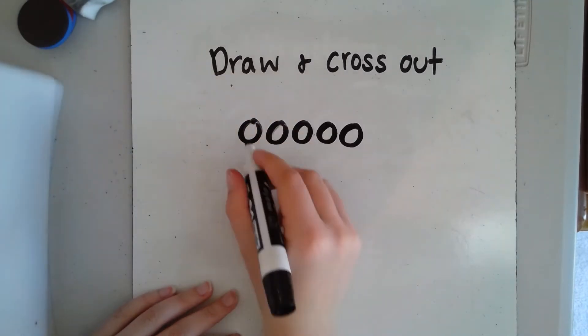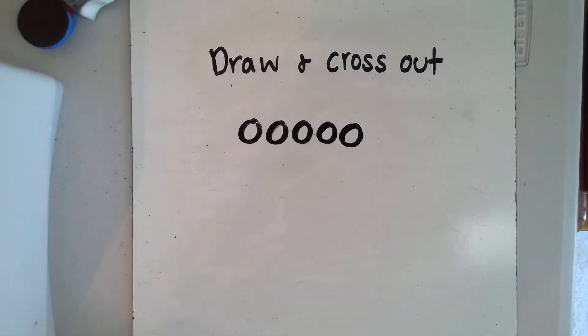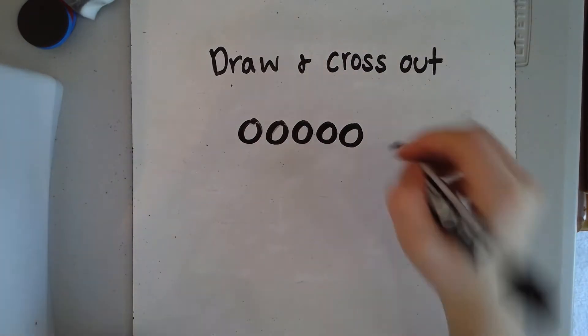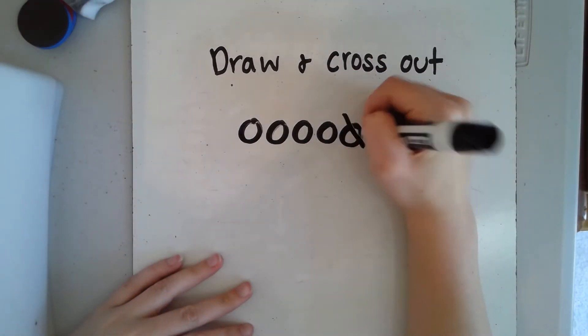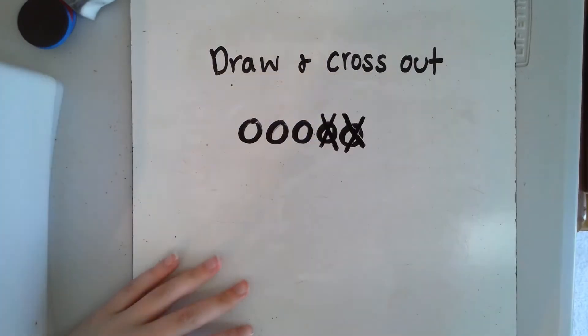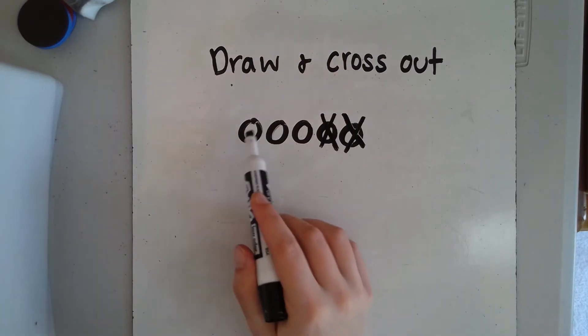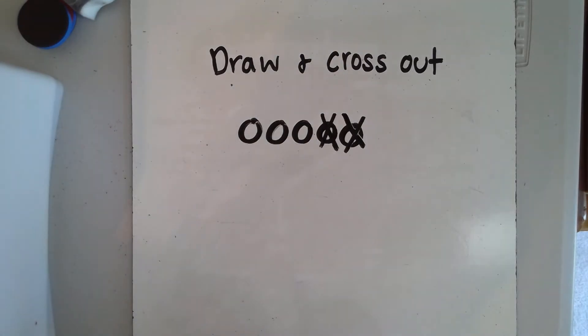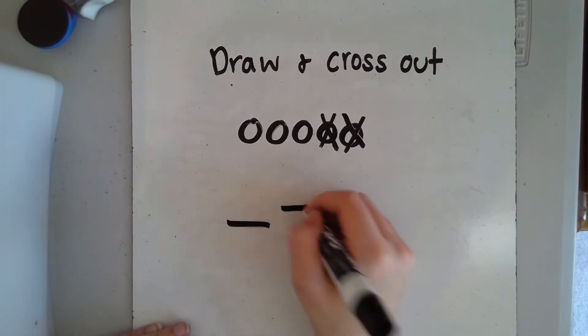Let's say I started with one, two, three, four, five circles. Then I crossed out or took away two. How many do I have left? Let's count and see: one, two, three.